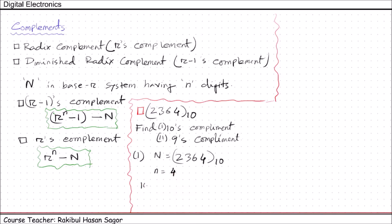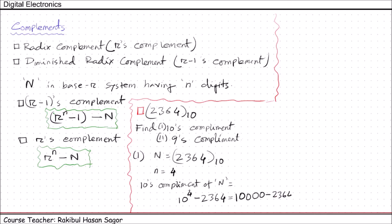So we can write: 10's complement of N equals 10 to the power 4 minus 2364. That gives us 10000 minus 2364, all in base 10 system, which returns a value of 7636. And this is the 10's complement of the number 2364.